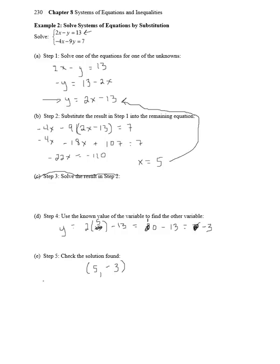Our solution should be (5, negative 3). Now we check it. We have negative 4 times 5 minus 9 times negative 3, which equals negative 20 plus 27, which equals 7, which it was supposed to. So it does check out.